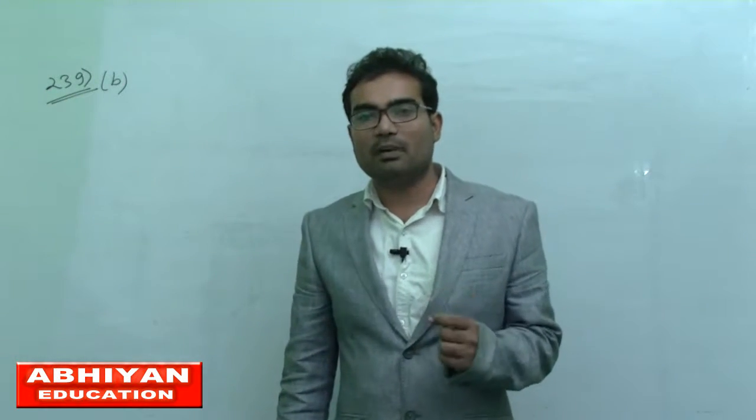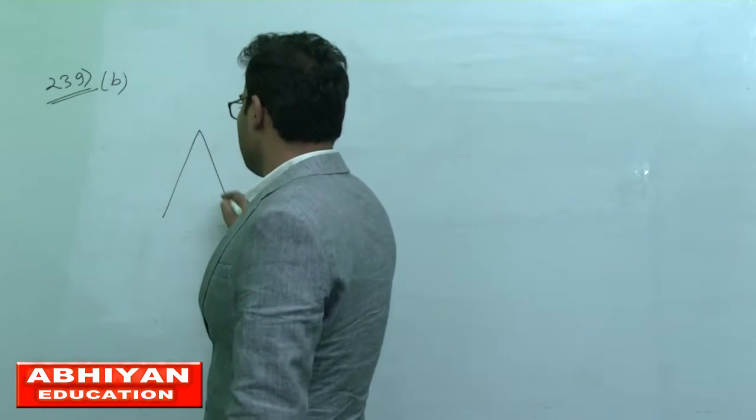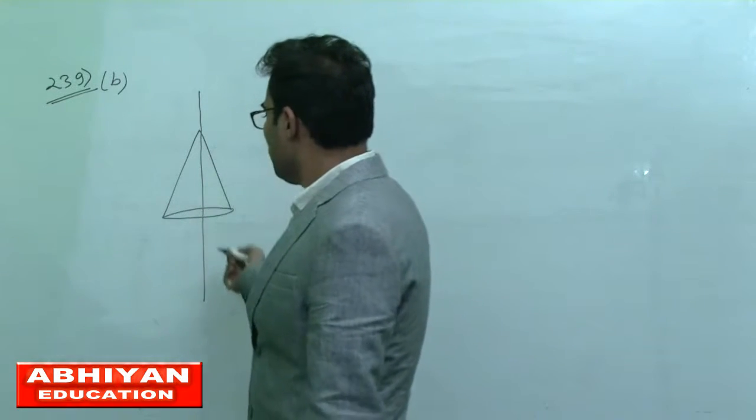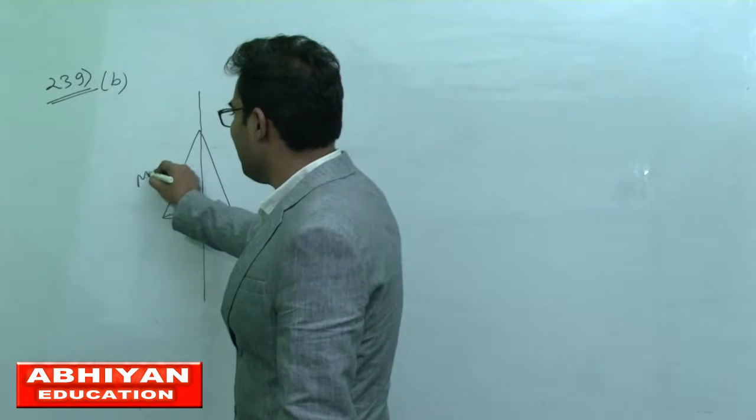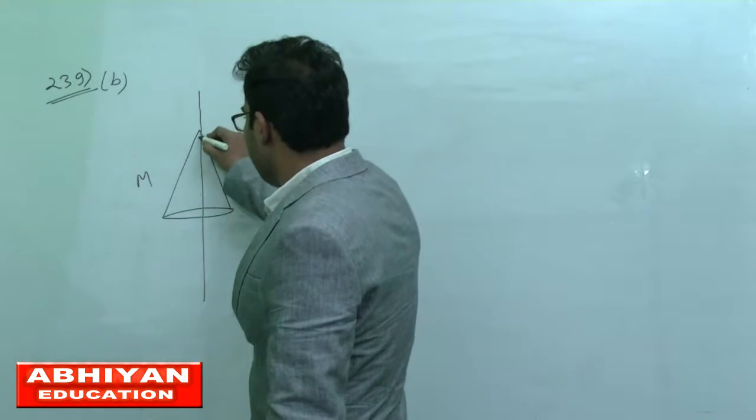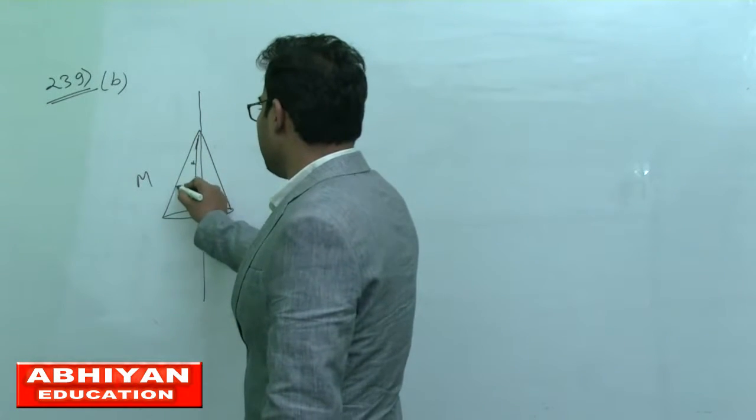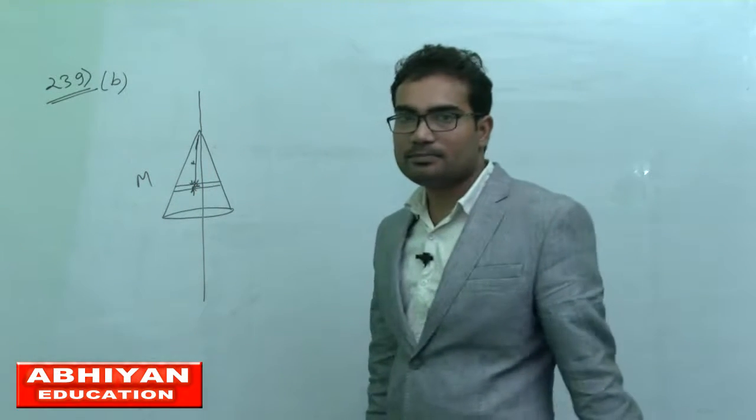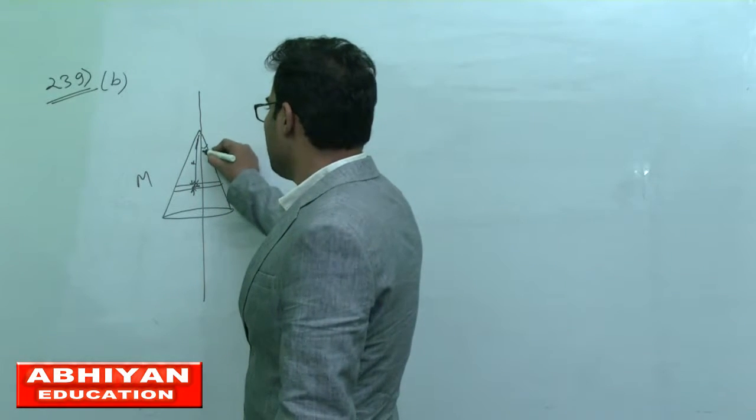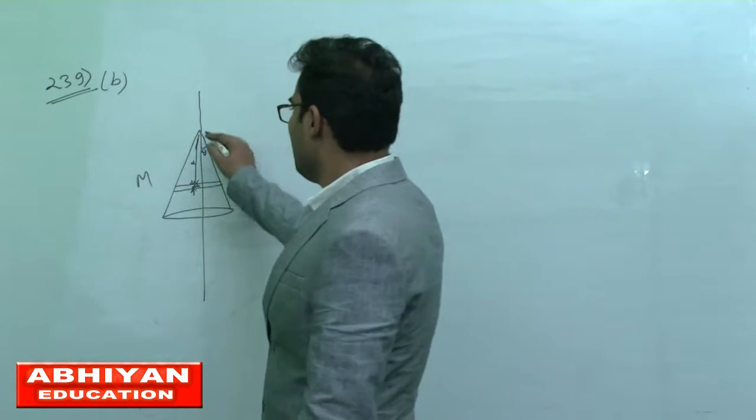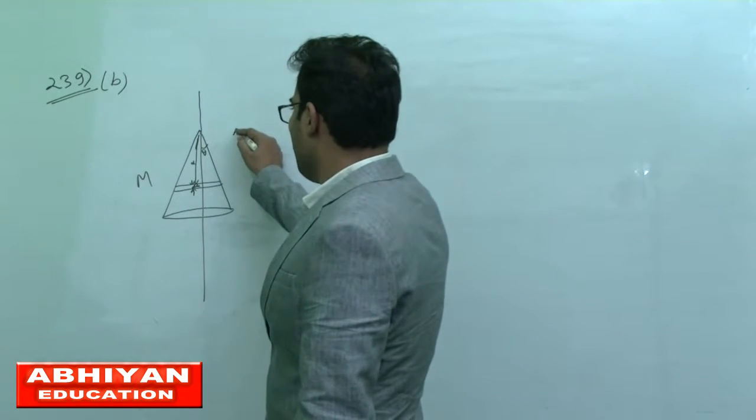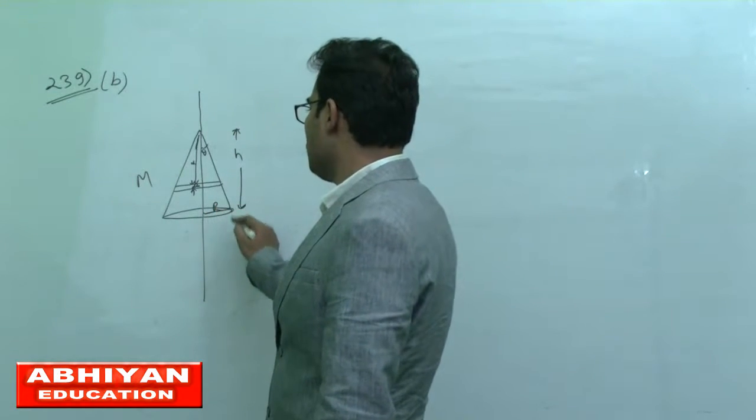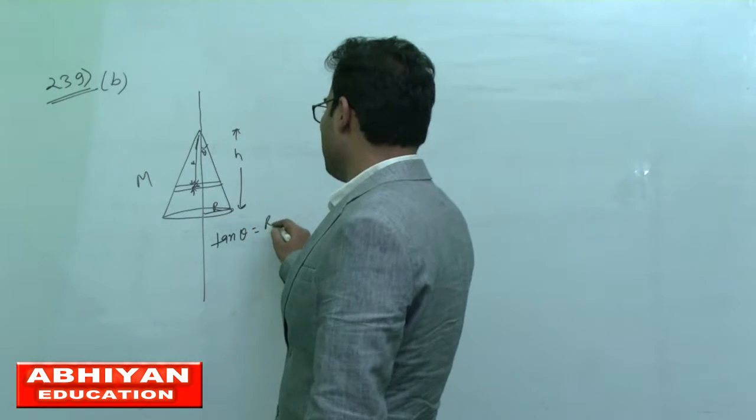Now let's move to question number 239 part b. Here we need to find the moment of inertia of a solid cone about this line. The mass is capital M. At distance x down from the apex, consider a disc of width dx. Consider the angle theta, and the cone's height is h.